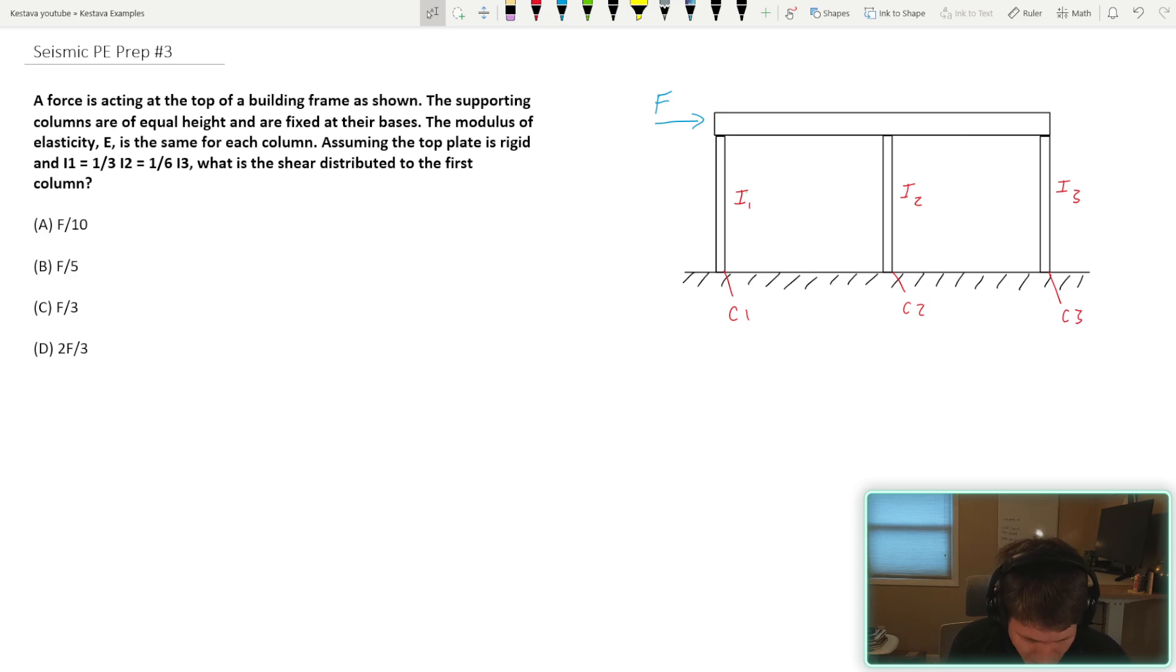Assuming the top plate is rigid and I1 equals one-third of I2 equals one-sixth of I3. I'll write that a little bit better. I just couldn't type that very neatly. What is the shear distribution to the first column?